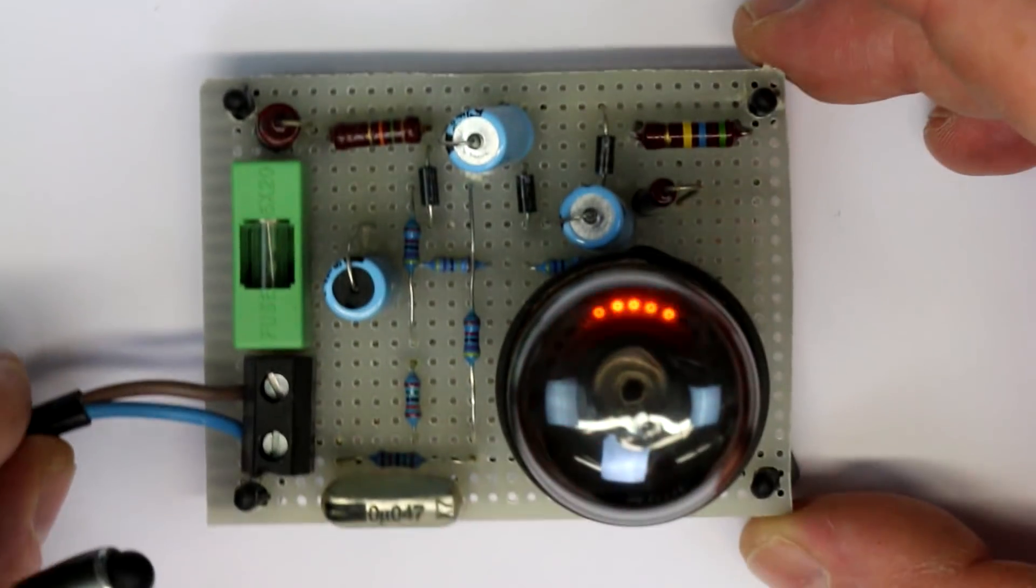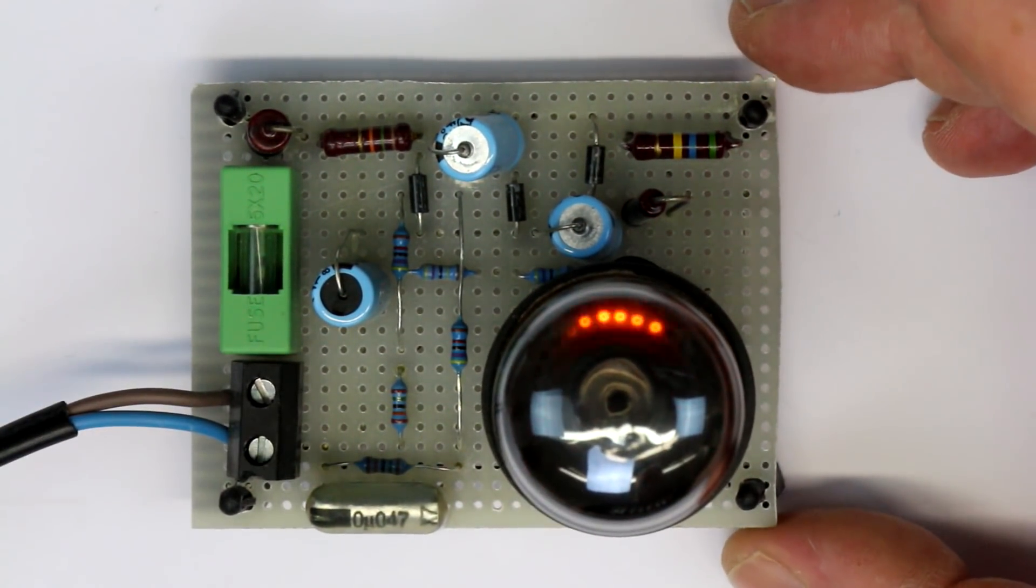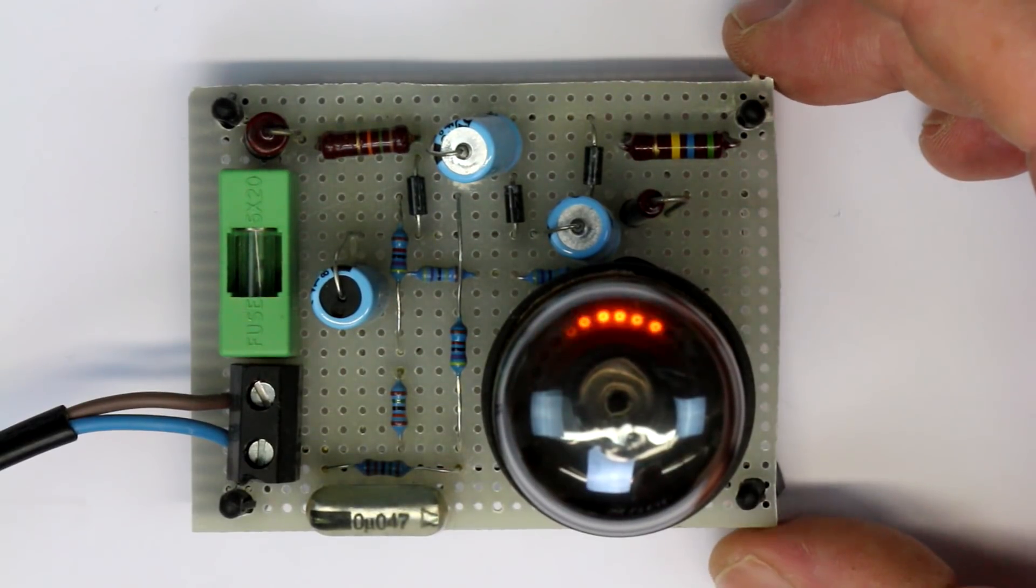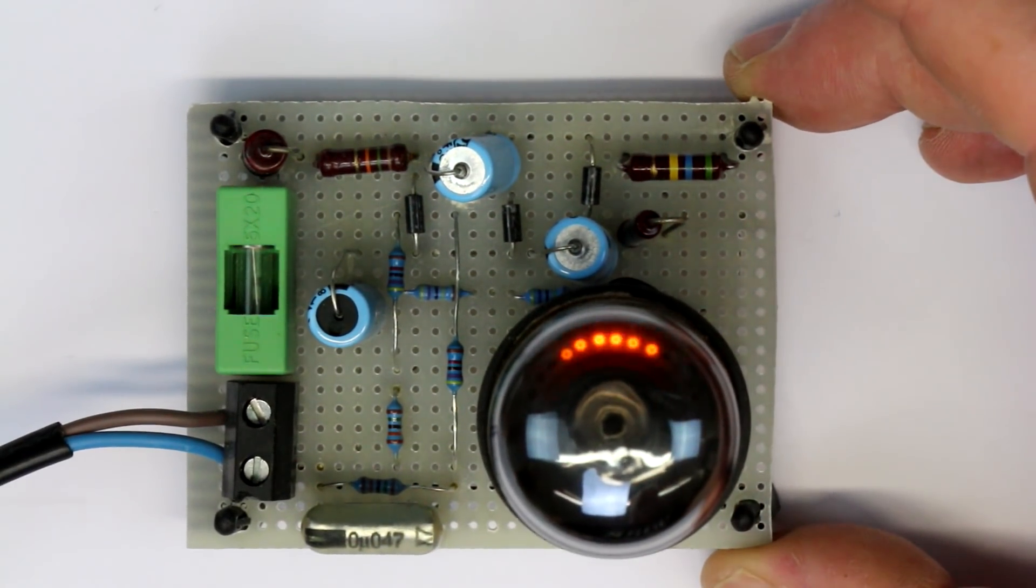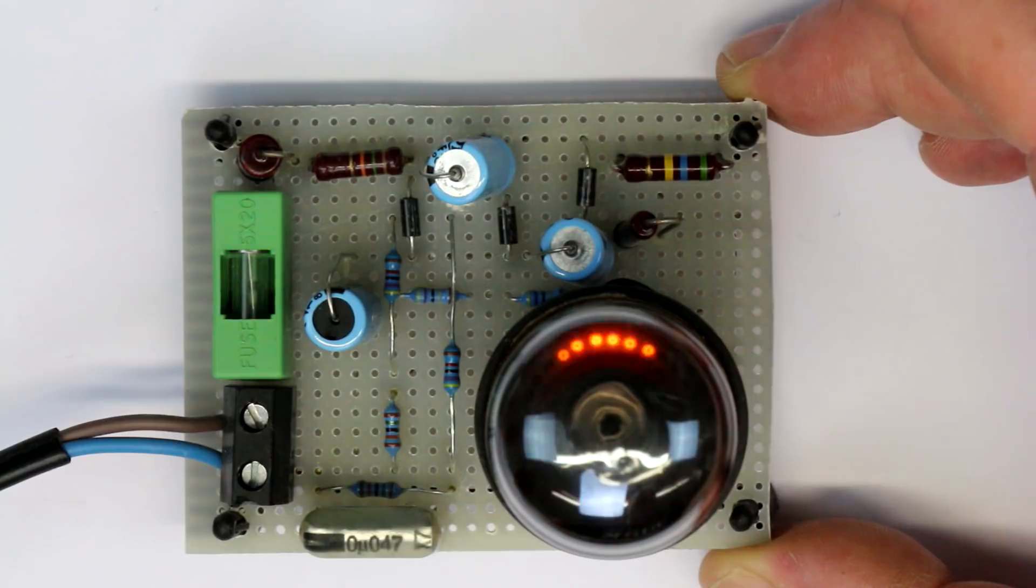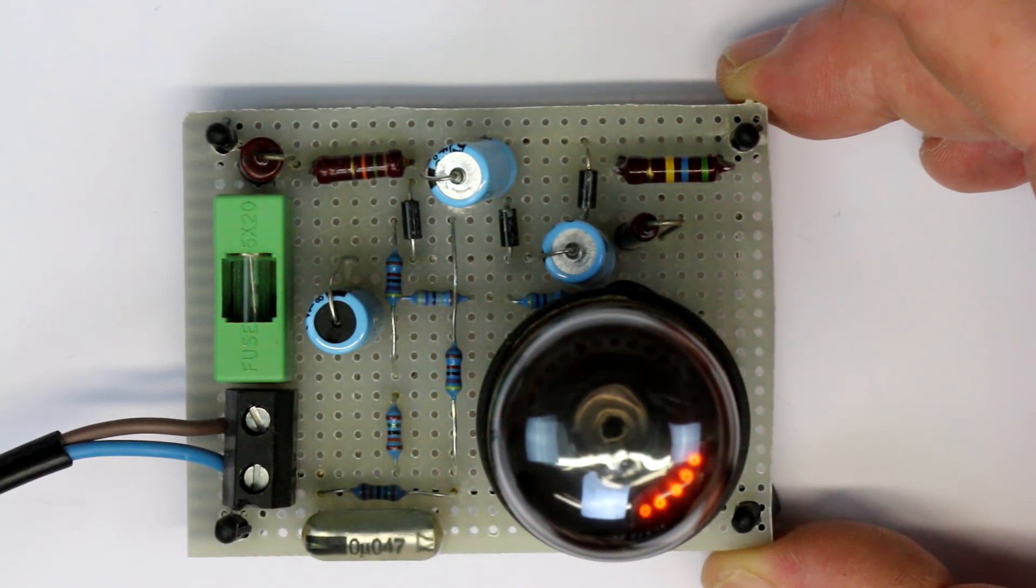So you see the neon filled ones can last, as many tubes do, for many many decades, but for example the hydrogen filled ones are probably all dead now because hydrogen just diffuses out of the glass-metal seal. Only helium is worse than hydrogen when it comes to diffusion.